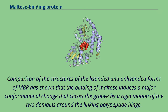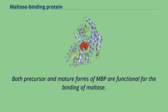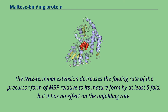Comparison of the structures of the liganded and unliganded forms of MBP has shown that the binding of maltose induces a major conformational change that closes the groove by a rigid motion of the two domains around the linking polypeptide hinge. Both precursor and mature forms of MBP are functional for the binding of maltose. The NH2 terminal extension decreases the folding rate of the precursor form relative to its mature form by at least five-fold, but it has no effect on the unfolding rate.